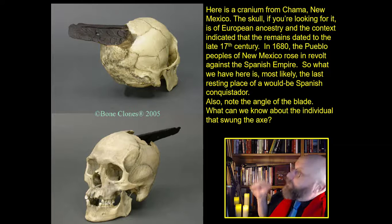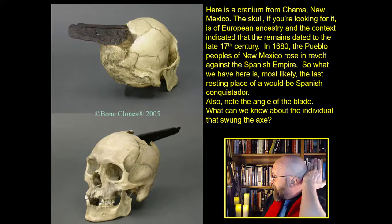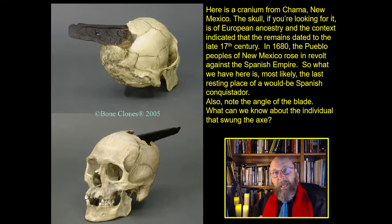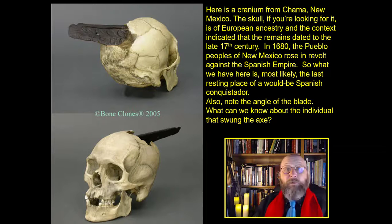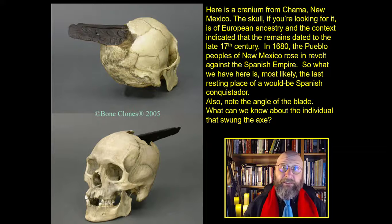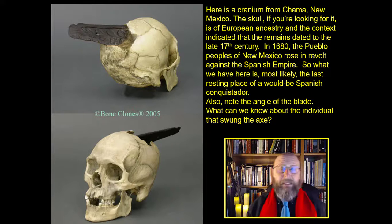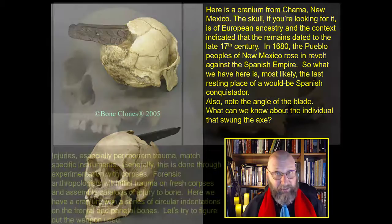Also notice the angle of the blade — the individual was struck from behind at this angle, which is generally how left-handed people hold axes. So this would-be conquistador met his end at the hands of a left-handed Native American.